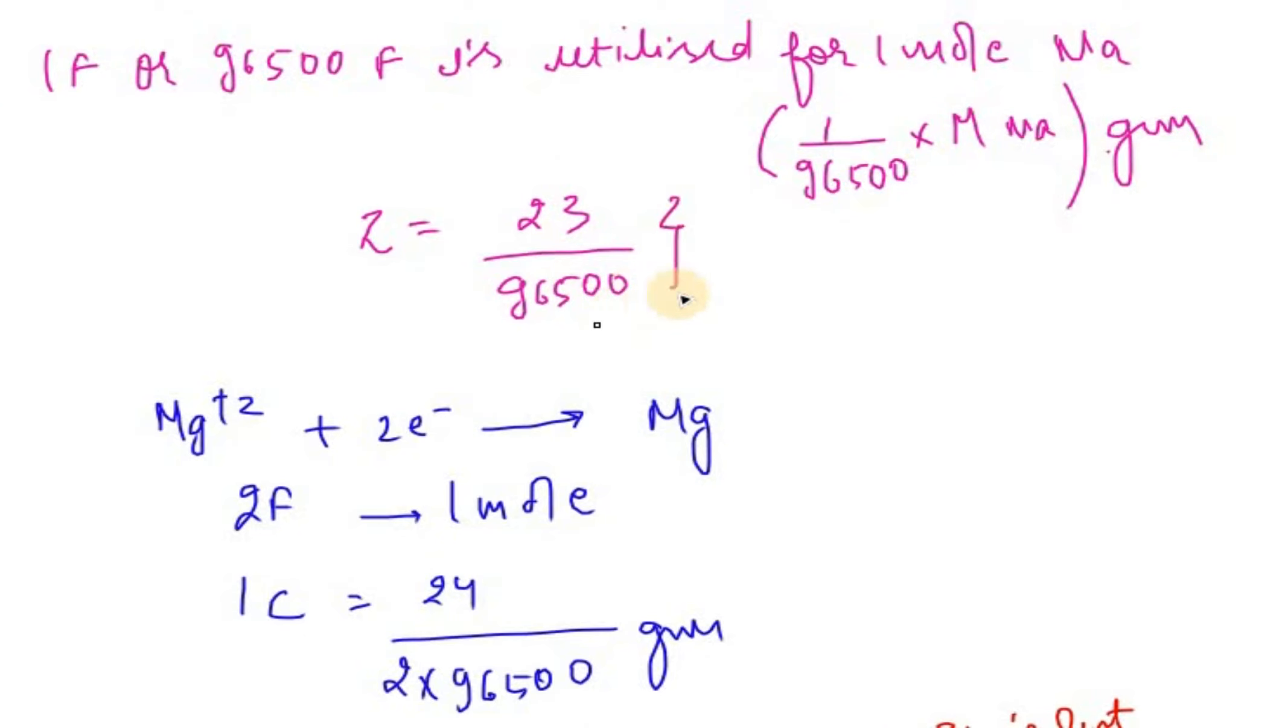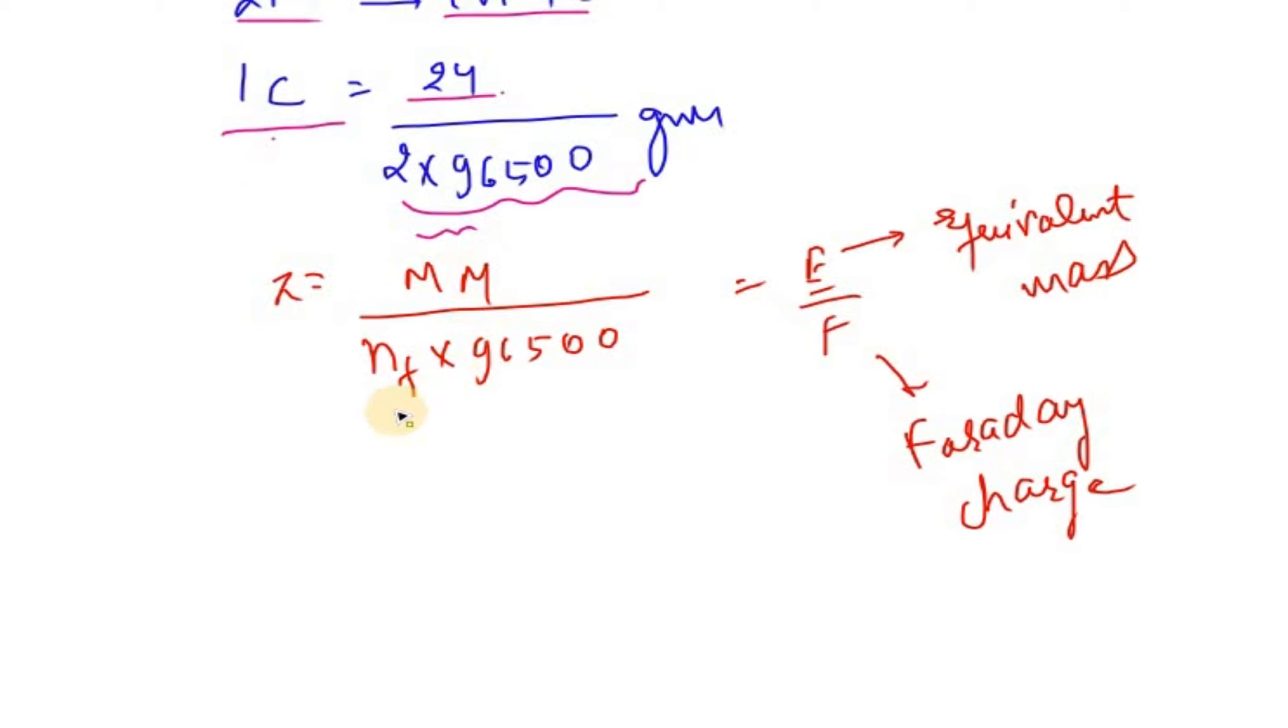the mass of substance oxidized or reduced at electrode is directly proportional to the charge utilized in the process throughout the solution. Whenever we have a solution, the mass of substance oxidized or reduced at electrode is directly proportional to the charge utilized in the solution. How much charge we have used is directly proportional to it.